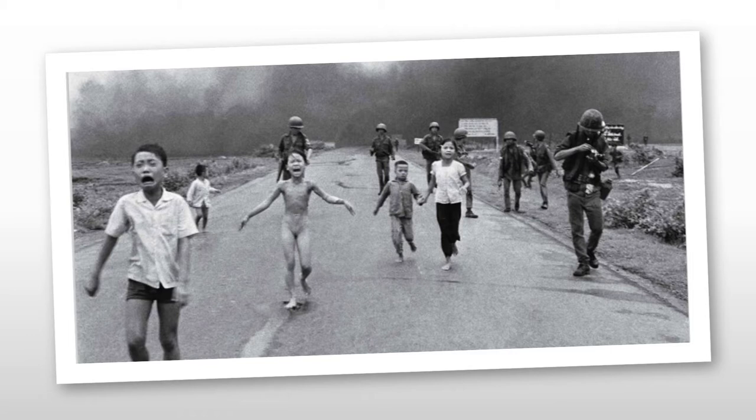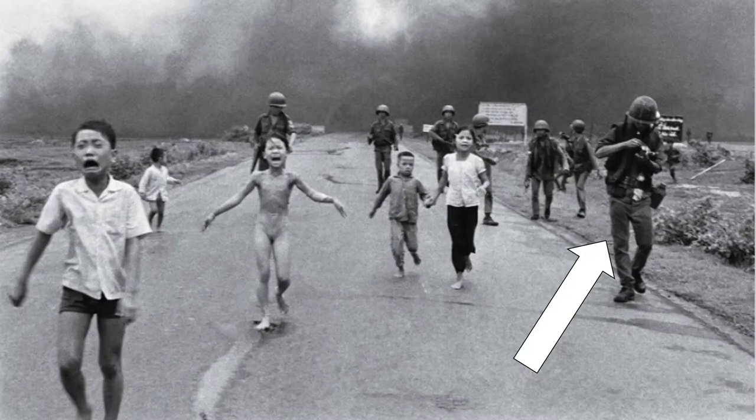How does that photograph make you feel? Is it important that this photograph exists? This is the same photograph, but this time you can see arrows pointing to somebody on the right-hand side. If you look closely, you should be able to see that this is a photographer who, as these children are running past him screaming, is doing something with his camera — presumably altering a setting, ready to take another photograph.